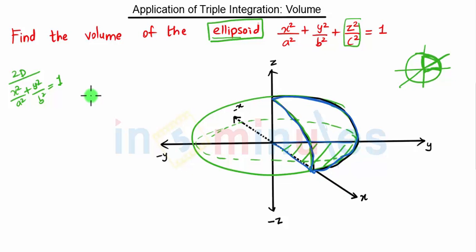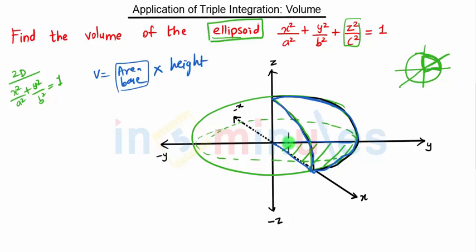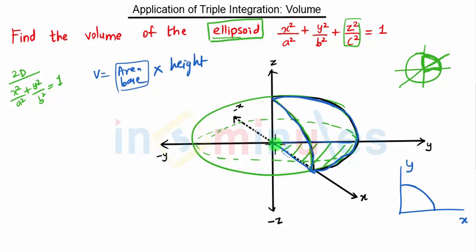The shadow of this ellipsoid on the xy-plane gives us the base. Volume is area of base times height, so we need the area of the base. The height goes from a point on the base up to the surface of the ellipsoid. We will use spherical polar coordinates.